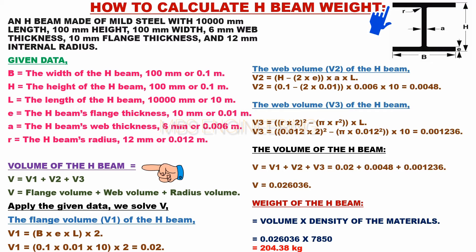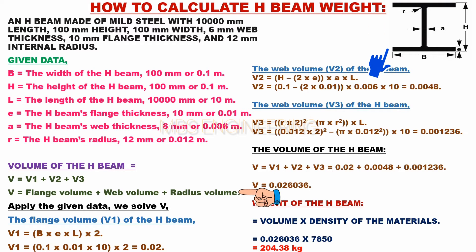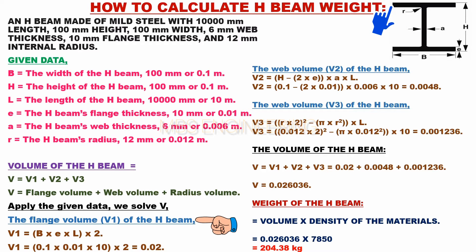We calculate the volume of the H-beam: V = V1 + V2 + V3, which equals flange volume plus web volume plus radius volume. First, we calculate the flange volume V1. V1 = B × A × L × 2 = 0.1 × 0.01 × 10 × 2 = 0.02 cubic meters.